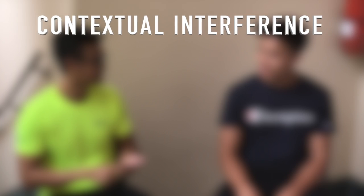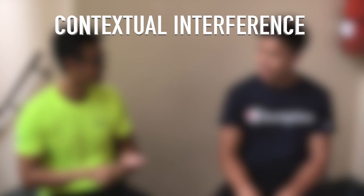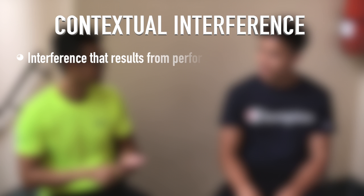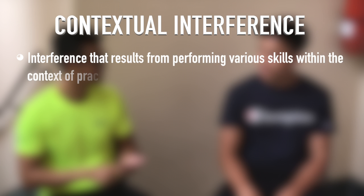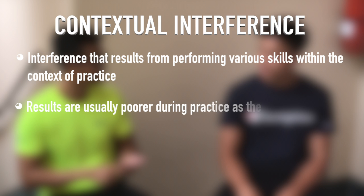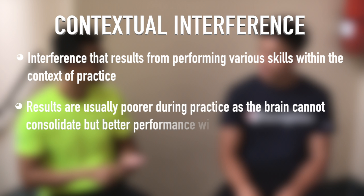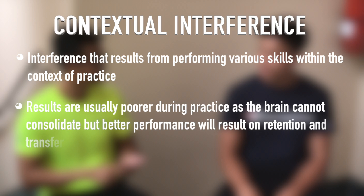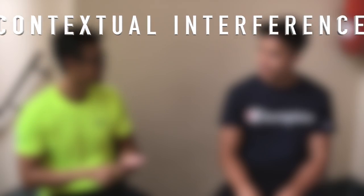And then there's also contextual interference. Contextual interference is the interference that results from performing various skills within the context of practice. Results are usually poorer than in practice as the brain cannot consolidate, but better performance will result on retention and transfer.